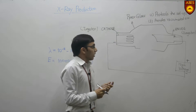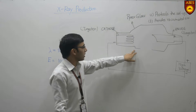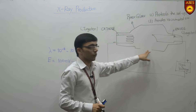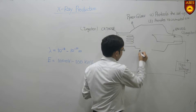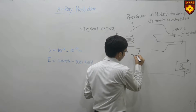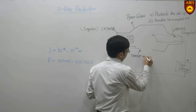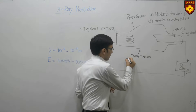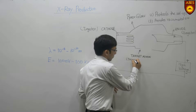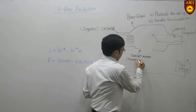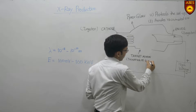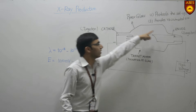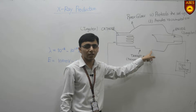Before describing how the process starts, you can see that there is a window called the target window. This is our target window, and it is actually the thinning of the glass. This pyrex glass making the glass envelope is thicker at other sections but relatively thinner at this point.